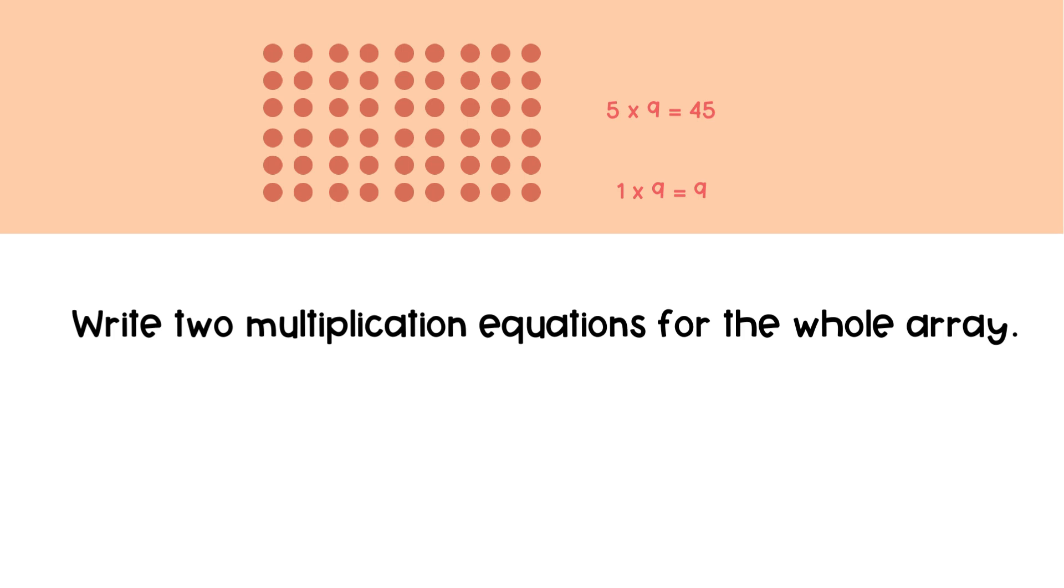Write two multiplication equations for the whole array. 6 times 9 equals 54, and 9 times 6 equals 54.